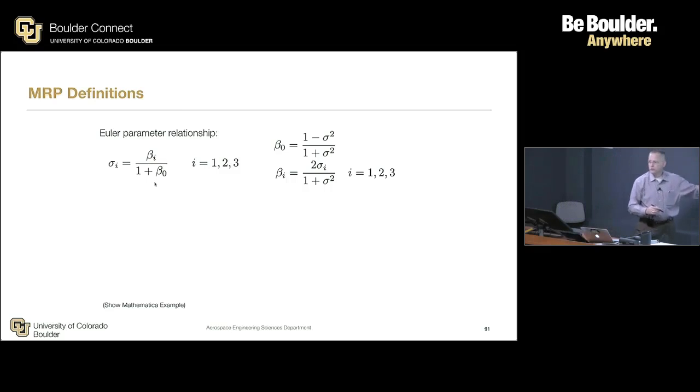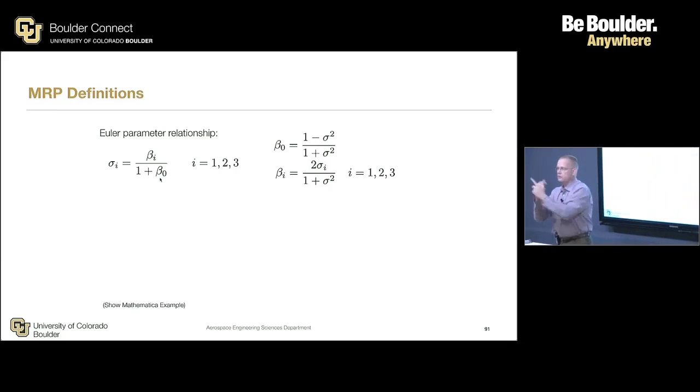So for what orientation now will these go singular? Do you have a beta 0 when it's upside down, 180? No, 180 beta 0 is 0. Oh, so then 360 when it's like negative 1. Yeah. So wait a minute. If I'm telling you this is the inertial frame, this is your body frame, and they're identical, do you have a 0 or a 360 rotation? So is the MRP singular or non-singular?